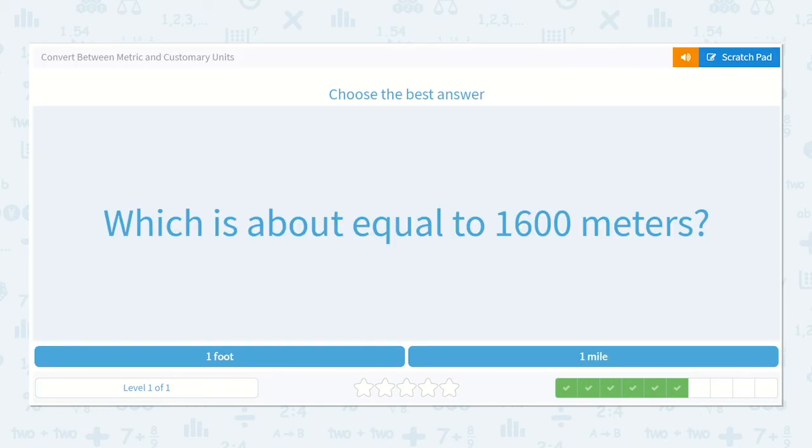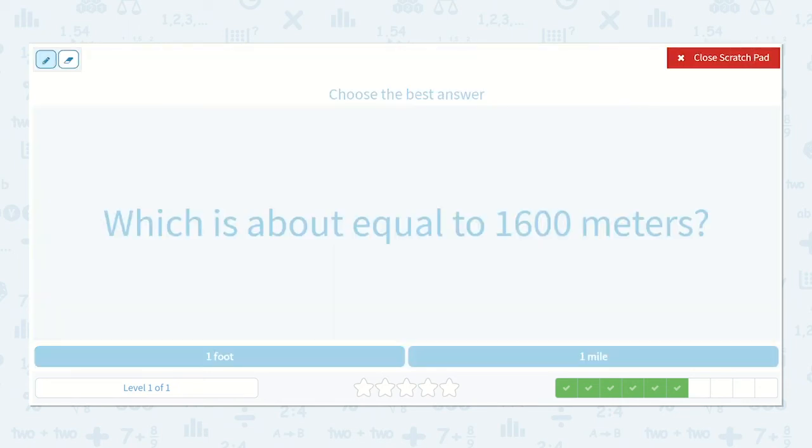Which is about equal to 1,600 meters? I know a meter is about 3 feet. And I know that 1 mile is 5,280 feet. So I could estimate that if we multiplied 1,600 by 3, it would be close to 5,280. And if 1 meter is 3 feet, 1,600 meters would definitely not be just 1 foot.